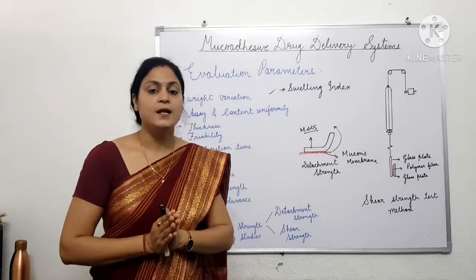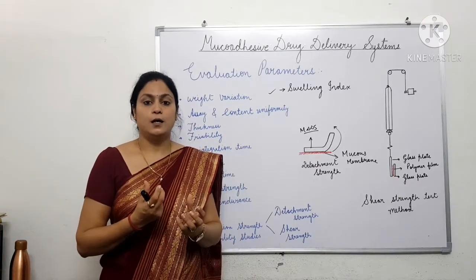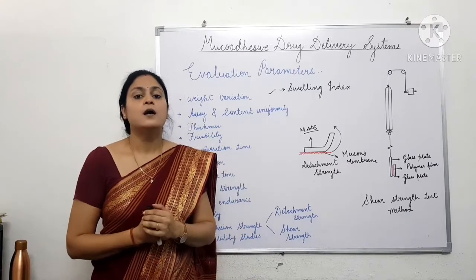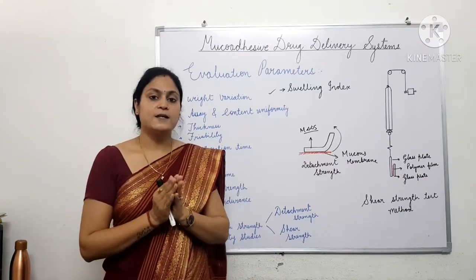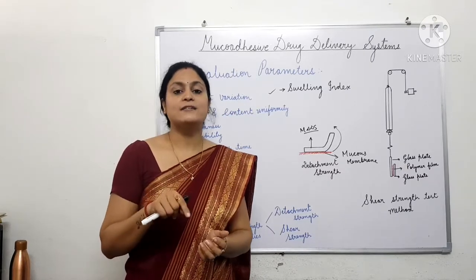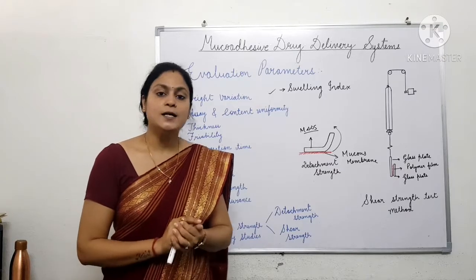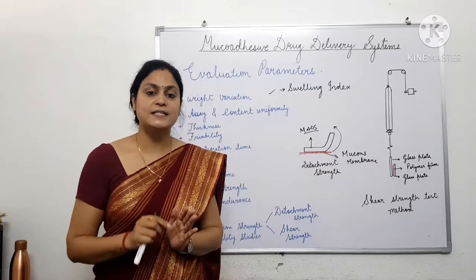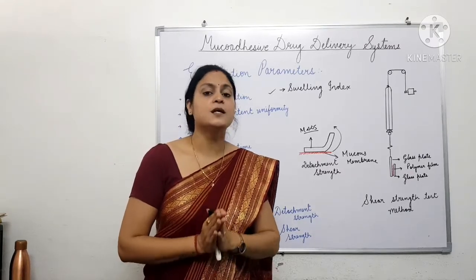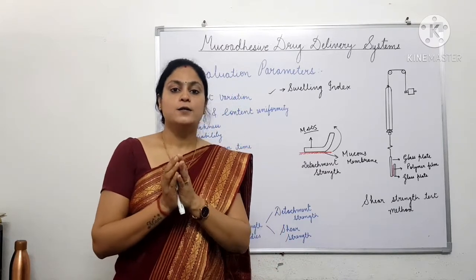Diffusion cells have a donor compartment on the upper side and a receptor compartment on the lower side, and the diffusion cell is mounted over a magnetic stirrer so that temperature and stirring speed is maintained. Between the donor and receptor compartments, mucous membrane is mounted on which a muco-adhesive device — for example a patch — is adhered. After a particular interval of time, samples are taken from the receptor compartment and analyzed with the help of UV-visible spectrometer, providing knowledge about the permeation of drug through the mucous membrane into the receptor compartment.